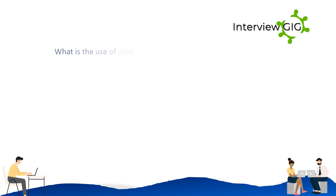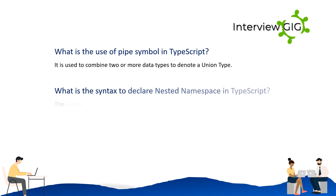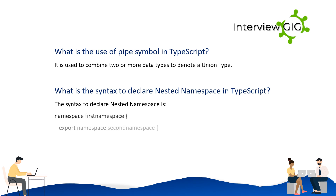What is the use of the pipe symbol in TypeScript? It is used to combine two or more data types to denote a union type. What is the syntax to declare a nested namespace in TypeScript? The syntax is: namespace FirstNamespace { export namespace SecondNamespace { export class ClassName { } } }.